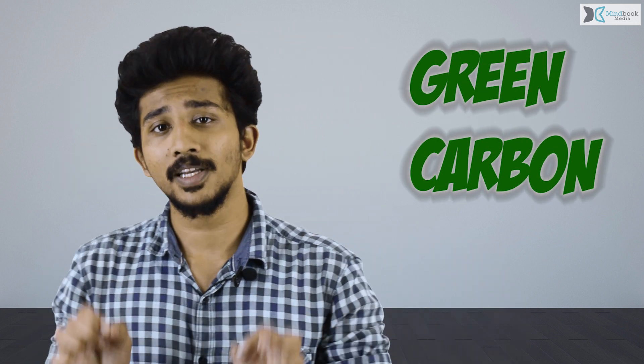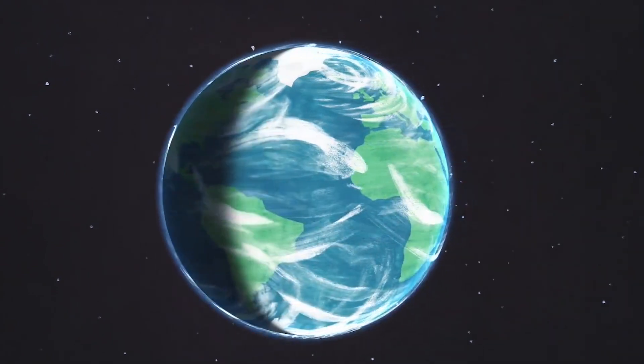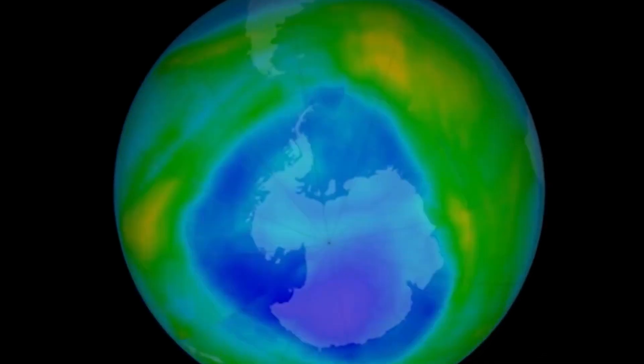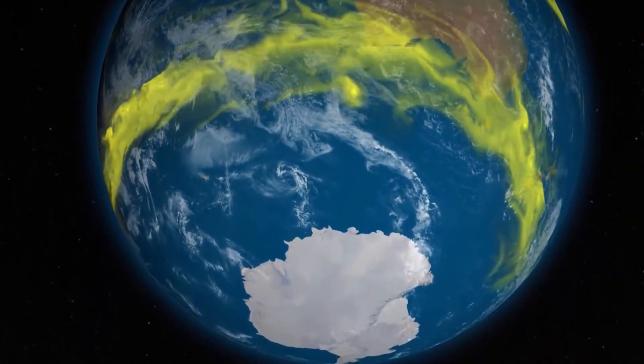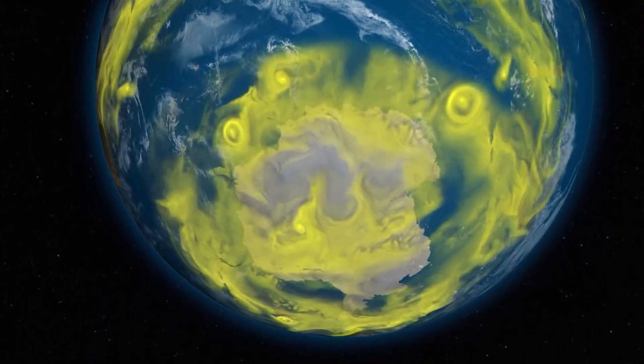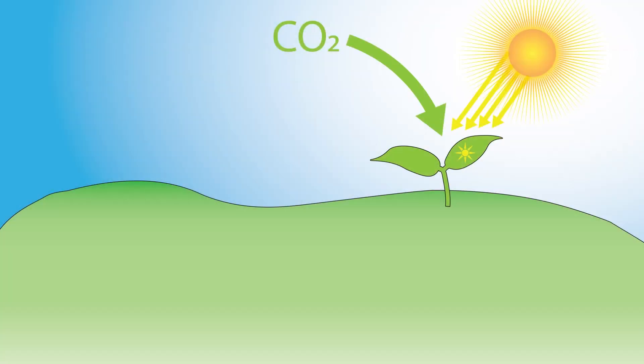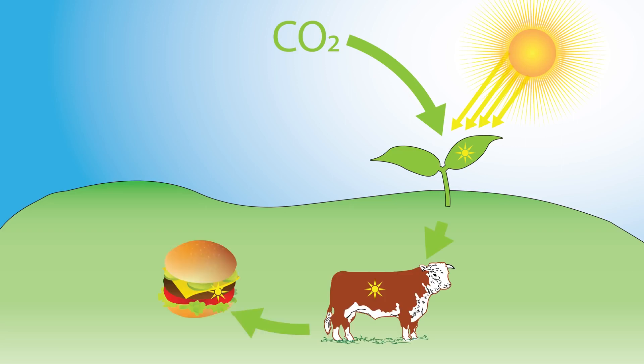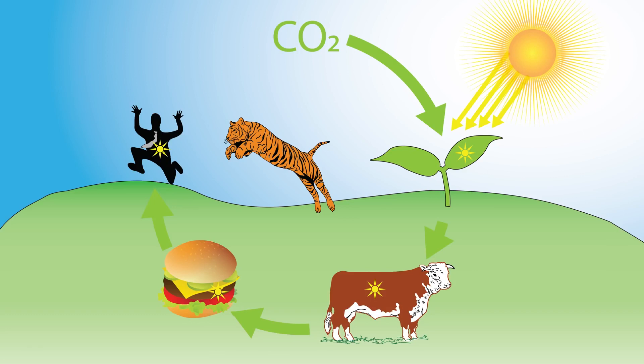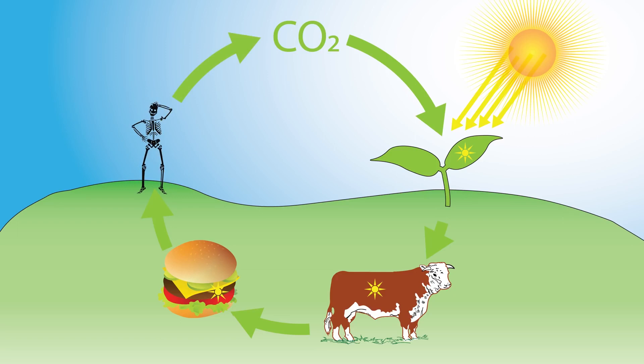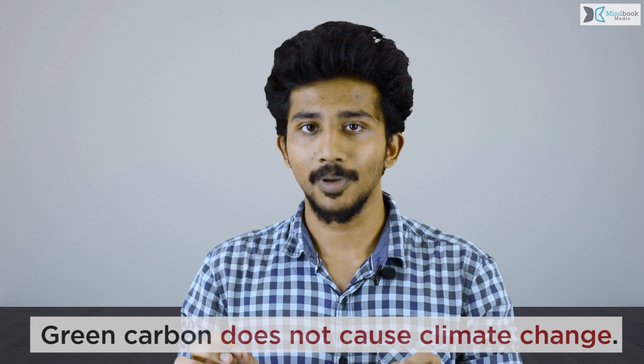So what is green carbon? Simply put, green carbon is the carbon that is supposed to be here. Earth has always had carbon in its atmosphere — without it, Earth would be a cold, lifeless planet. The greenhouse effect keeps our Earth warm. Earth has a natural carbon cycle: plants take in carbon dioxide and give out oxygen, animals eat these plants, bigger animals eat those animals, and eventually when an animal dies, it decomposes and the carbon is returned to the atmosphere. This forms a closed loop — the natural carbon cycle. So green carbon doesn't cause global climate change, because green carbon is our climate.